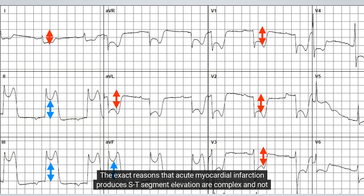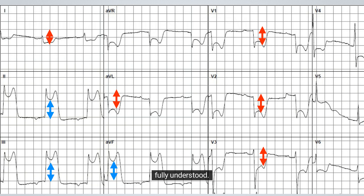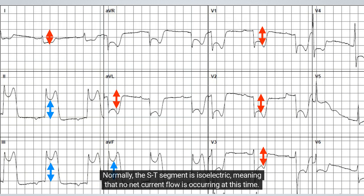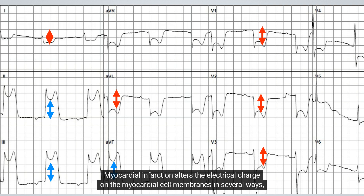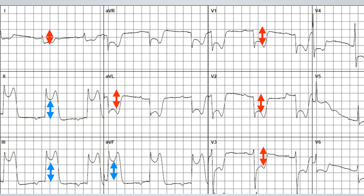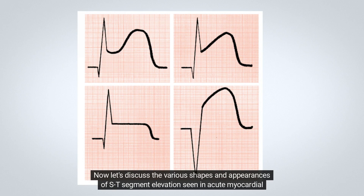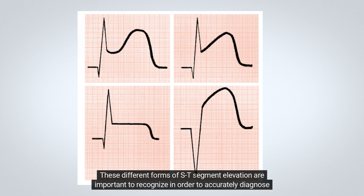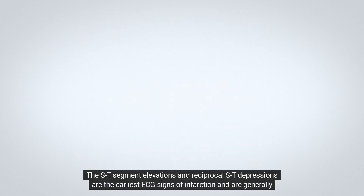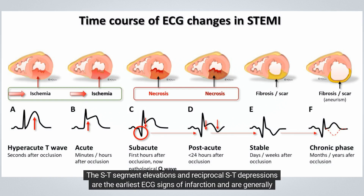The exact reasons that acute myocardial infarction produces ST-segment elevation are complex and not fully understood. Normally, the ST-segment is isoelectric, meaning no net current flow is occurring at this time. Myocardial infarction alters the electrical charge on the myocardial cell membranes in several ways, resulting in abnormal current flow or current of injury, which produces ST-segment deviations. The ST-segment may be plateau-shaped, dome-shaped, or obliquely elevated. These different forms of ST-segment elevation are important to recognize in order to accurately diagnose acute myocardial infarction. The ST-segment elevations and reciprocal ST-depressions are the earliest ECG signs of infarction, generally seen within minutes of blood flow occlusion.